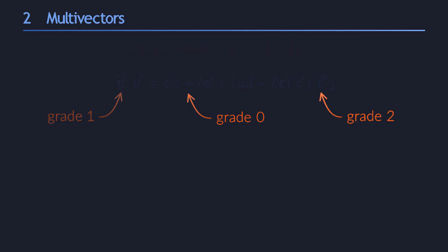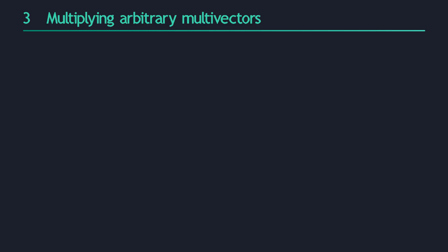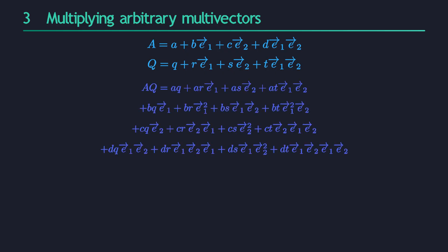The final thing we have to do is figure out how to multiply two arbitrary multivectors. The algebra is actually really easy. We write each multivector as a linear combination of all the basis blades. The geometric product is linear, remember? This means that we can easily distribute one sum over the other. The result is a huge sum with 16 terms, one for each of the combinations of the coefficients.